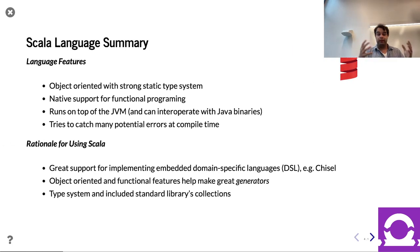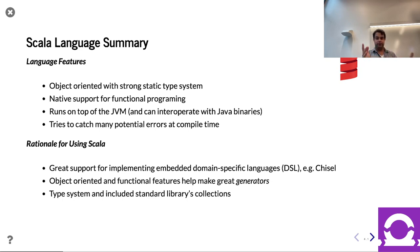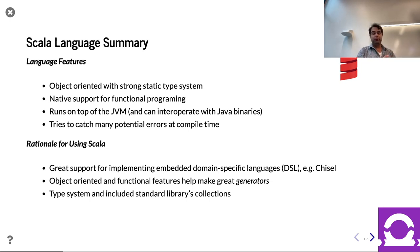Scala is the language Chisel is written in. It's a pretty fun language — started around 2003 and mature by 2007. It's a Java-descended language with a lot of cool features. It has object-oriented programming — objects on steroids, really. There's also a strong static type system, which is interesting because many errors that would be runtime problems in other languages become compile-time errors in Scala due to type checking.